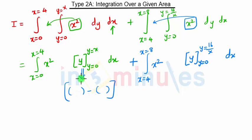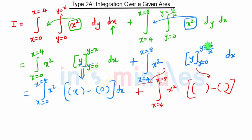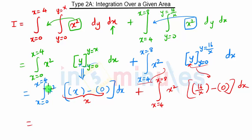Applying upper limit minus lower limit for R1: when we put y equal to x we get x, and when we put y equal to 0 we get 0, so that term is x minus 0, which is x. Then x into x squared gives x cubed.